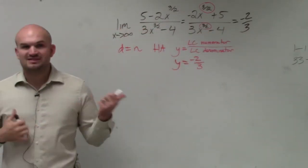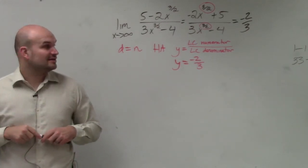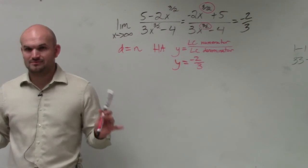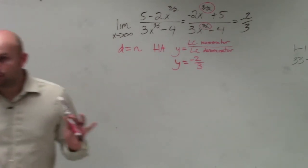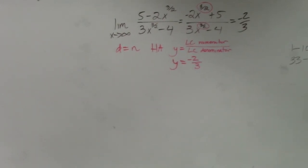Is everybody okay with the first two examples of horizontal asymptotes? You need to know those two rules. So again, degree in the numerator is...